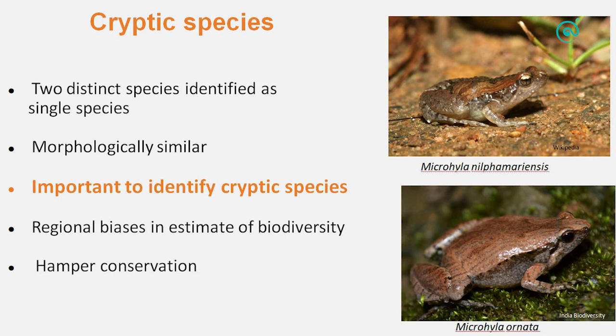What are cryptic species? Cryptic species are those that are morphologically similar. For example, if you see the two images, both of them look very similar, but they are two different species — the upper one is Microhyla neilgherriensis, the other is Microhyla ornata. If you just see their morphology, they are very similar, but when you do their genetics, they are two different species. When two different species are identified as a single species, those species are called cryptic species — they look very similar morphologically, but acoustically, life history traits, or genetics could be very different. It's important to identify these species because if we don't, we underestimate the biodiversity we have, and it also hampers conservation for such species.